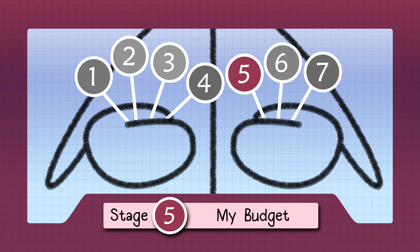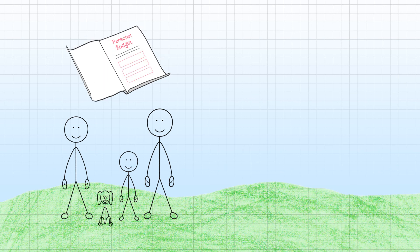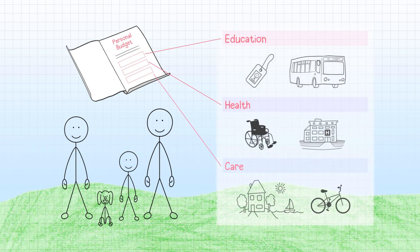Stage five, my budget. At stage five, the family will decide how they want to manage the budget, which comes with the EHC plan. The family may manage some of the funding themselves in order to best access the support that the young person needs.